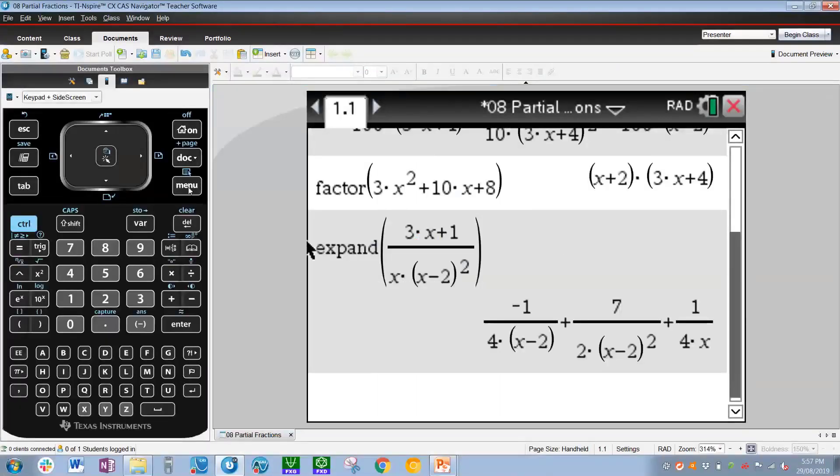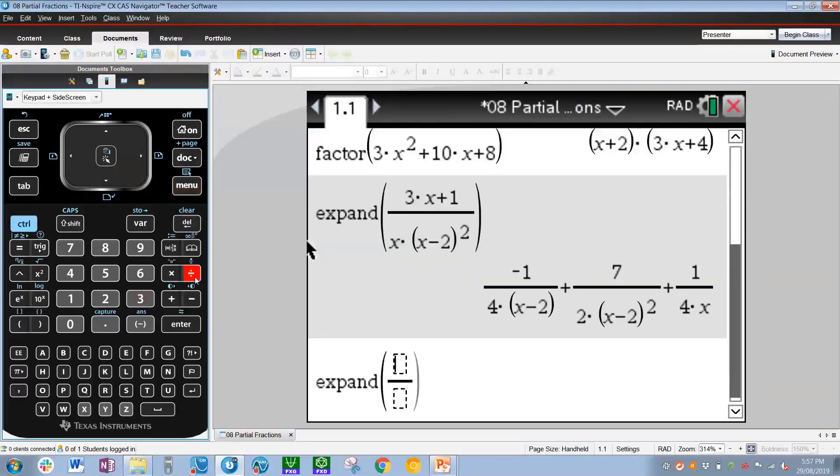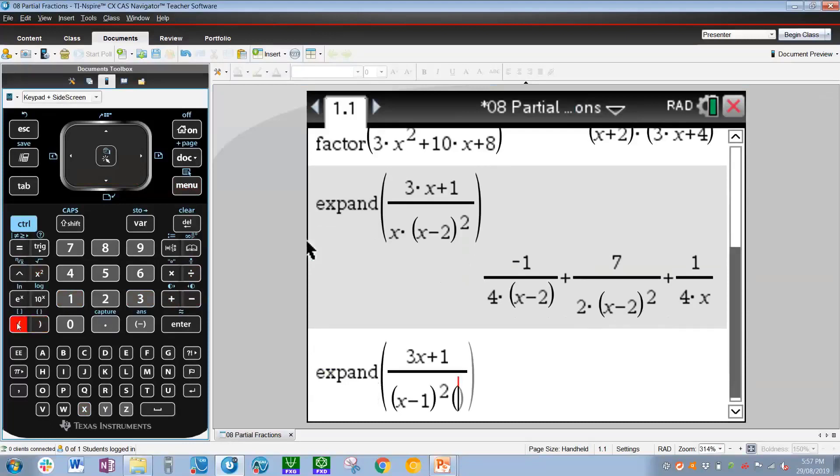Using expand as before: menu 3, 3, control divide, and our numerator is 3x plus 1, and our denominator is bracket x minus 1 close bracket squared multiplied by x squared plus 1 in another bracket.